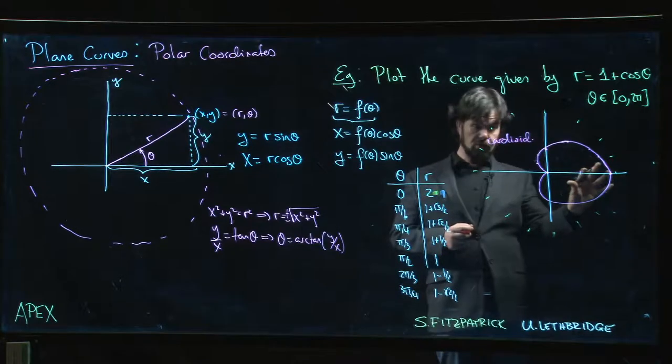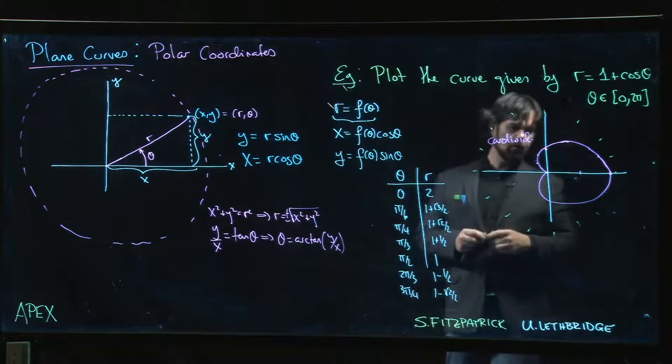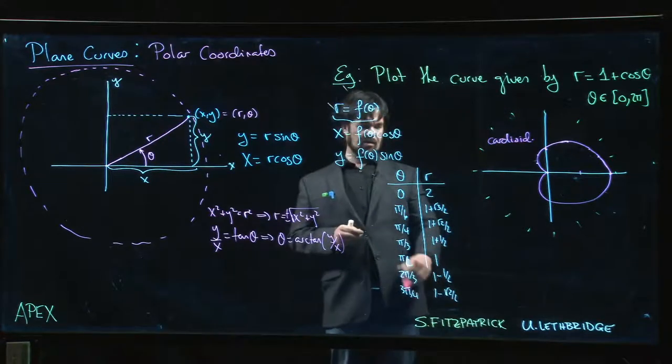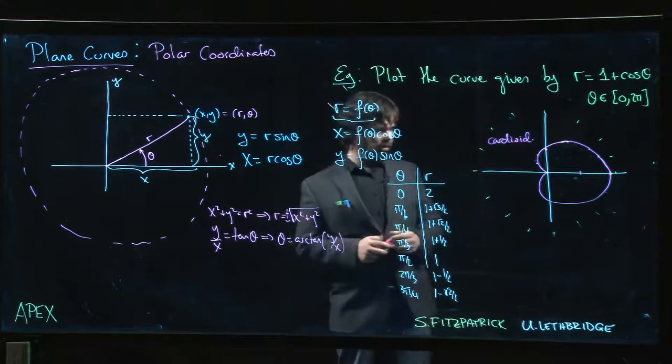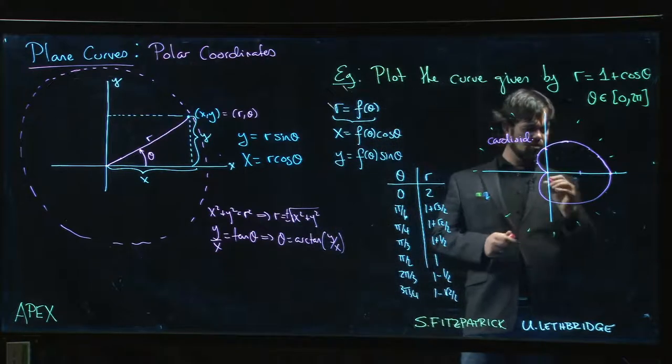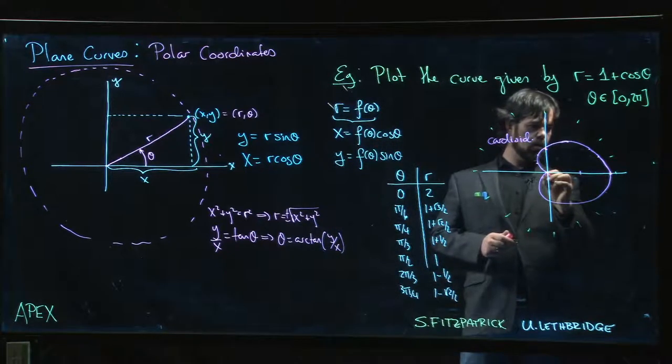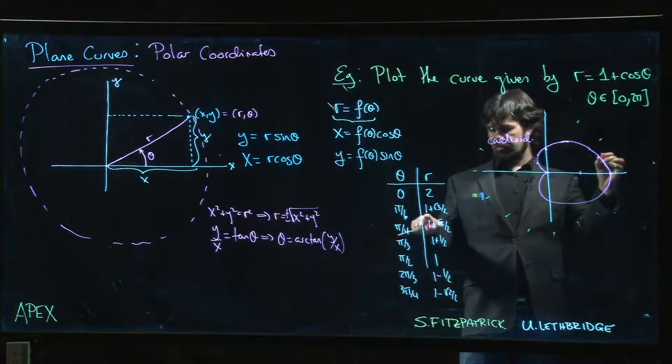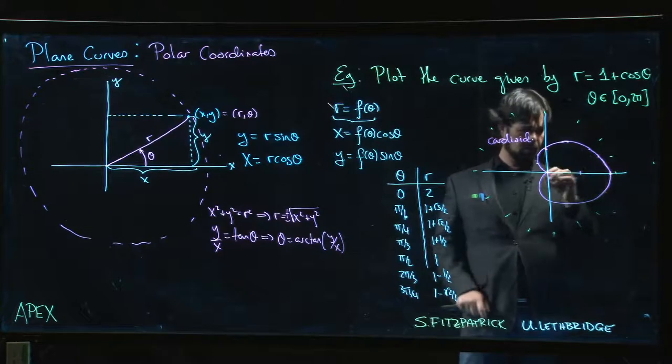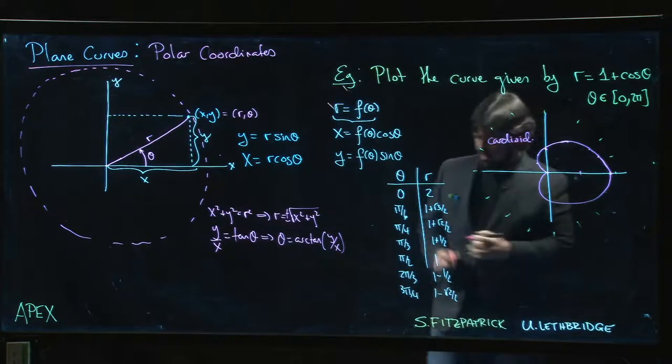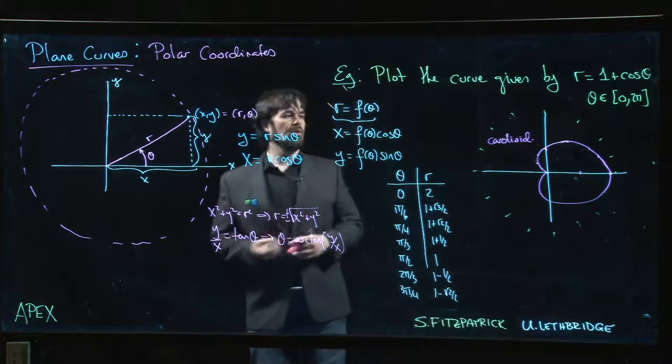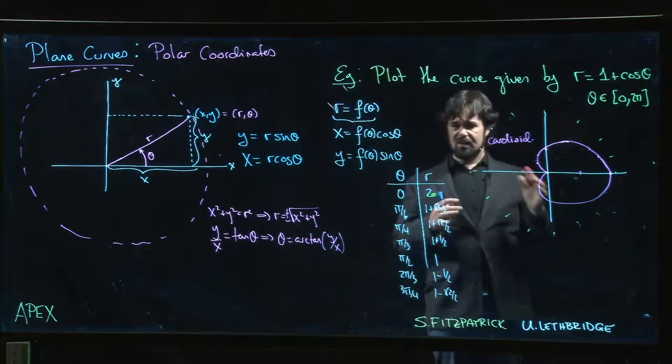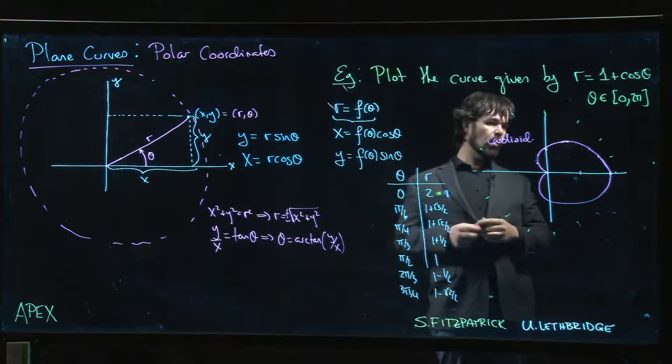So what you typically do, this gets really tedious. You don't want to actually plot points because you're trying to measure by hand like distance of two, then go to 30 degree angle at a distance of one plus root three over two. That's hard to do. So what you try to do really is you sort of try to eyeball it.